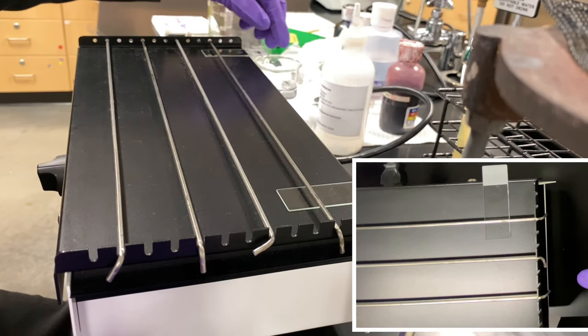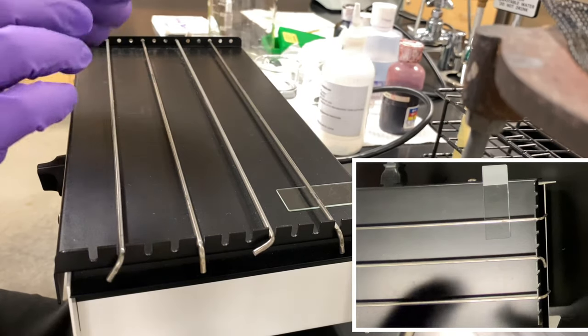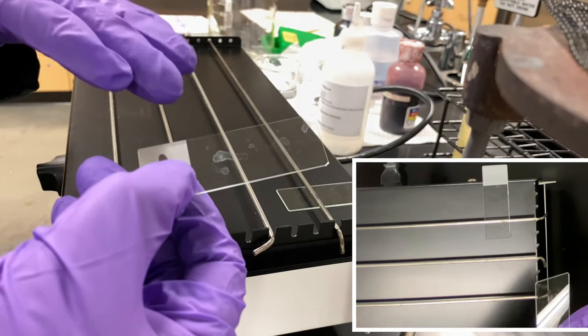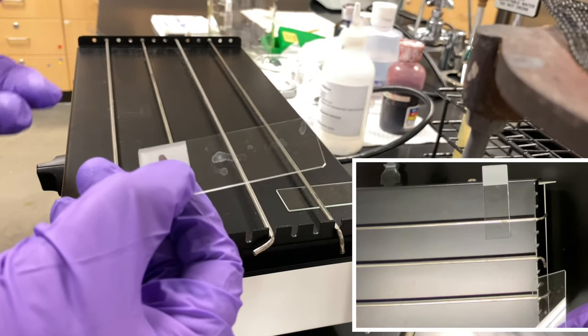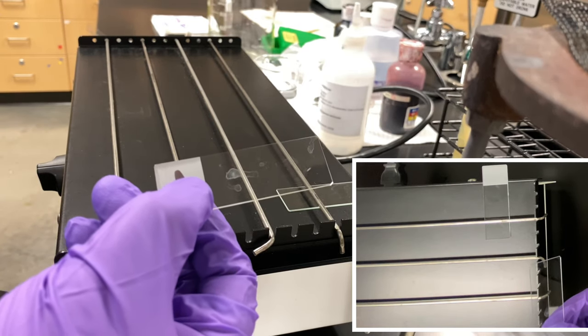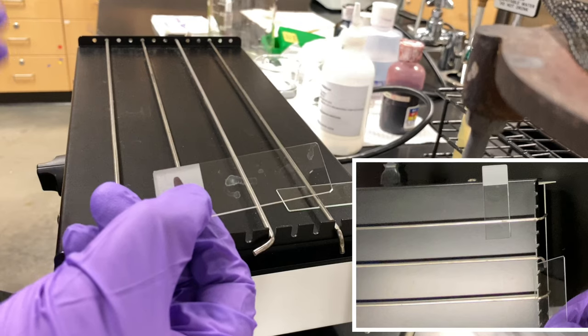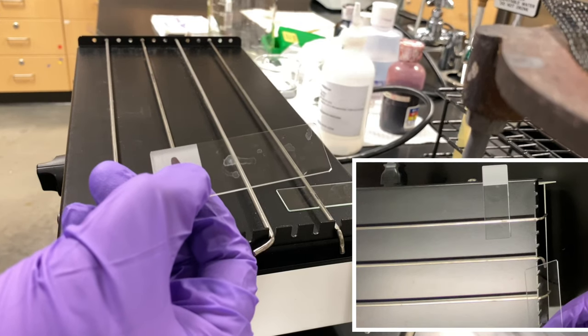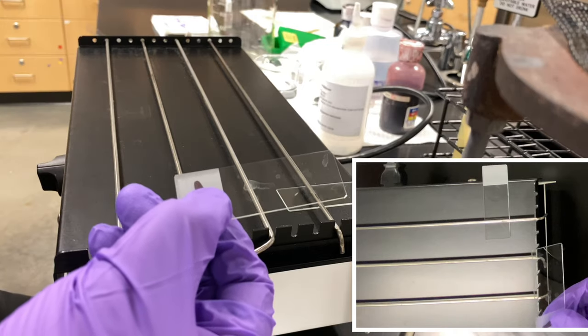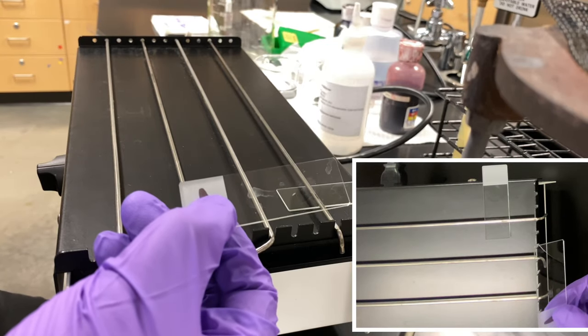What you'll start seeing is by the time it's done smearing and heat fixing, it'll create a very unique look to it, like some water dried out. In essence it did, but now it has an organism in there. What you have effectively done is allowed it to attach itself to the glass. Now we can proceed with the actual gram staining procedure or any other staining procedure.